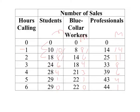We can solve the problem one of two ways. The first approach is to look at how the salesman would spend each hour, one at a time. His first hour would obviously be spent soliciting professionals, because it gives him the most bang per hour — the most extra sales. In fact, he would spend his first, second, and third hours with professionals, then drop down to ten and solicit students, and we continue until we have spent the nine-hour budget.